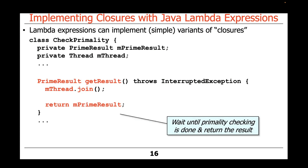The getResult method is going to be used to wait until the thread is finished by calling the thread join method, which is a form of what's known as a barrier synchronizer that waits until the thread has gone away. Then we return the prime result, which comes back as the result from the getResult method on the CheckPrimality class.